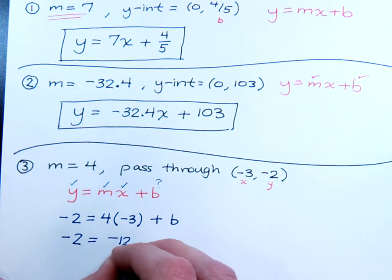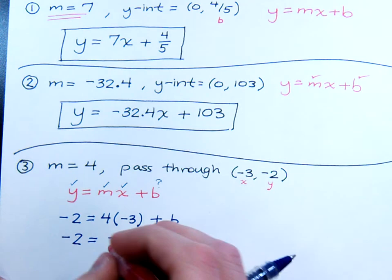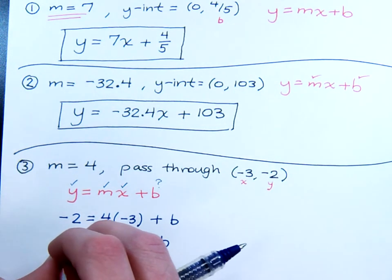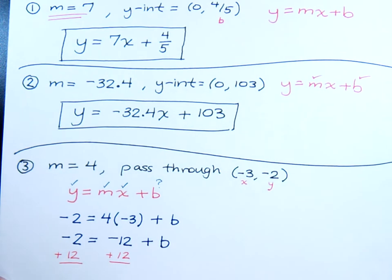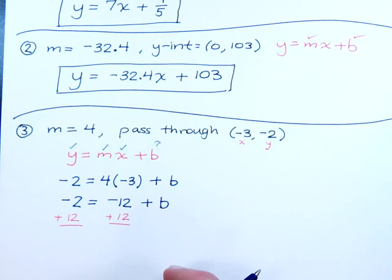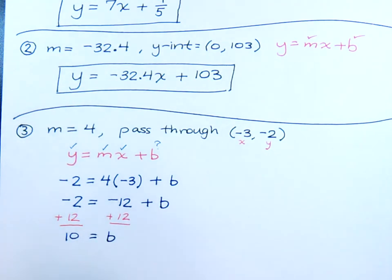Negative 2 is equal to negative 12 plus b. Add 12 to both sides. And then you're going to find out that 10 equals b or b equals 10.